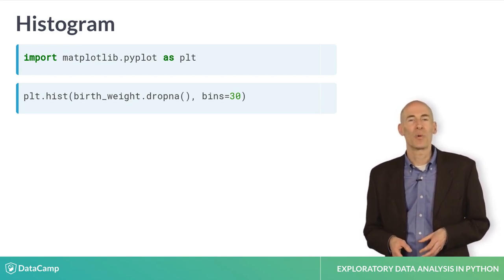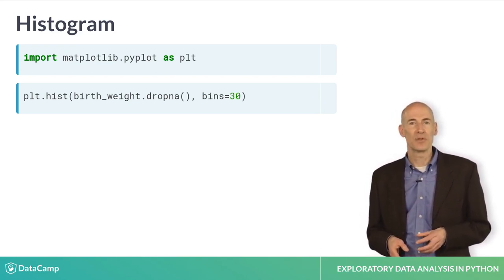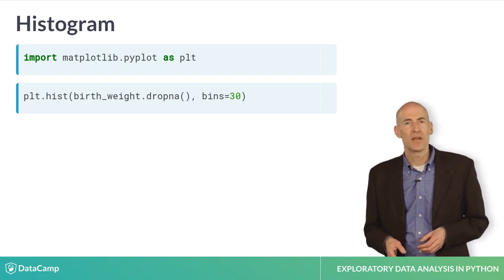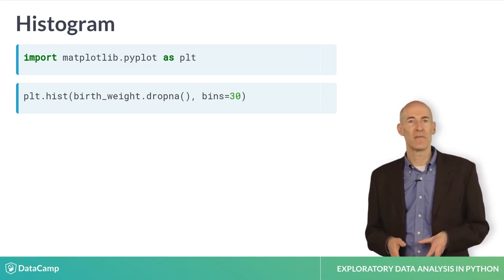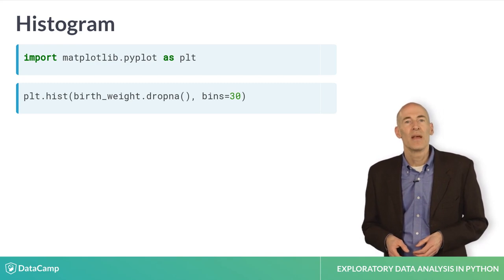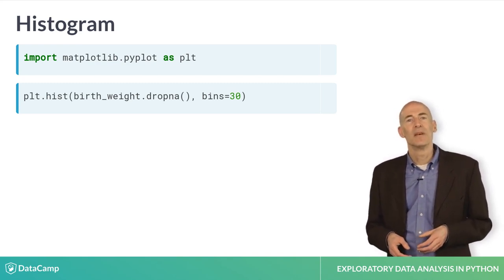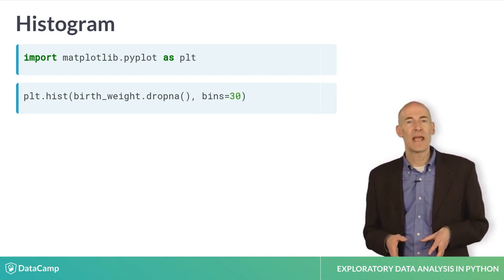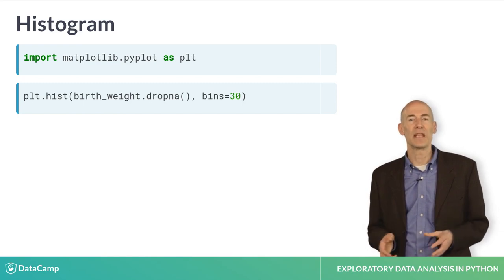However, PyPlot doesn't work with nans, so we have to use dropna, which makes a new series that contains only the valid values. The second argument, bins, tells hist to divide the range of weights into 30 intervals, called bins, and count how many values fall in each bin.